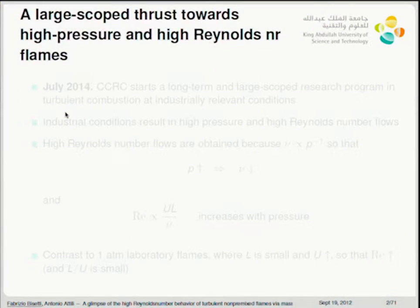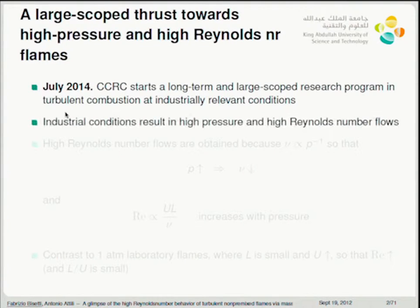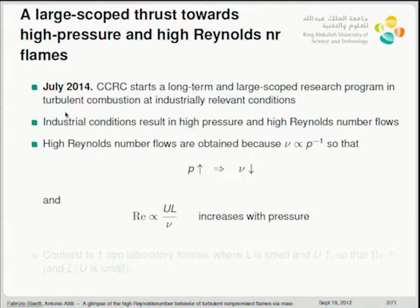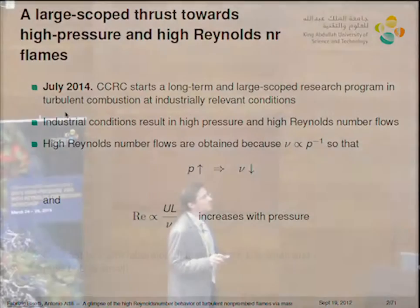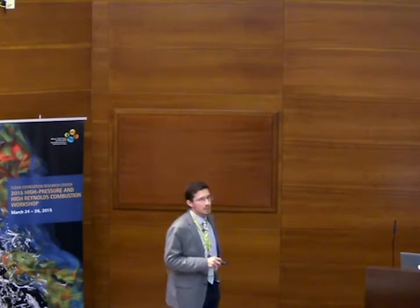Let me provide some context. At CCRC, we've started a large-scoped thrust towards high pressure and high Reynolds number flames, because we want to investigate turbulent combustion at industrially relevant conditions. Industrially relevant conditions mean high pressure, and as a consequence, high Reynolds number flows. The reason Reynolds numbers are high has less to do with U and L, and mostly has to do with the fact that kinematic viscosity is inversely proportional to pressure. So as pressure goes up, kinematic viscosity goes down, and Reynolds number increases with pressure.